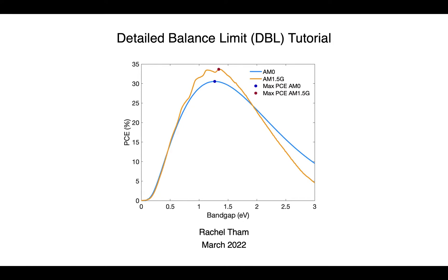Hi everyone. In our last video, we worked on introducing the AM0 and AM1.5G spectra. Those are the fundamentals in order to understand what kinds of solar spectra are incident onto our solar devices, and is an intro to a very important concept in the solar cell world, which is called the Detailed Balance Limit.